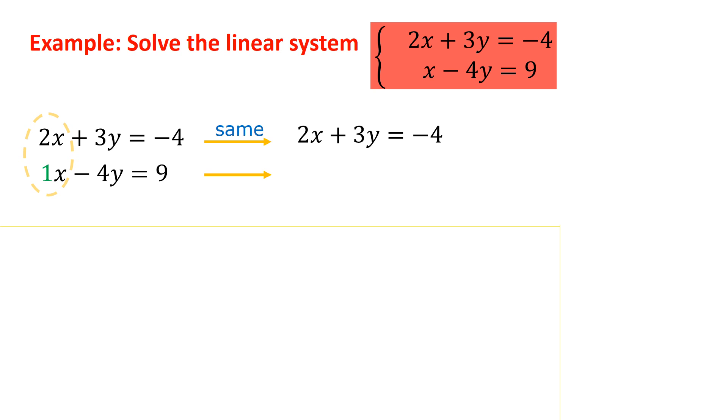And that gives me 2x minus 8y equals 18. Very important. That 9 over here needs to be multiplied as well by 2 to get the 18. I still don't have additive inverses, but I am a little bit closer. These numbers, 2x and 2x, are close to being additive inverses if we multiply one of these equations by negative 1. I'll multiply the bottom one by negative 1, but it could have been any. And I get the following values. Luckily now, the 2x and the minus 2x give us 0.